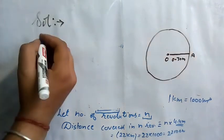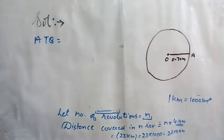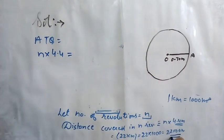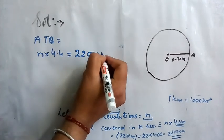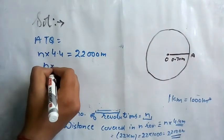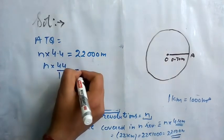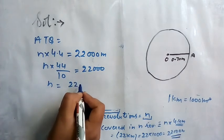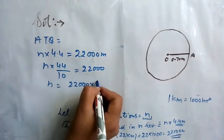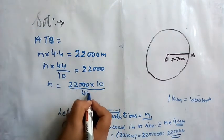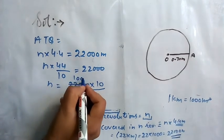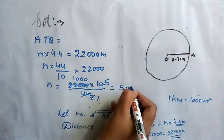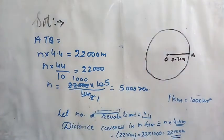According to the question, n × 4.4 = 22,000 meters. To find n, first remove the decimal: 4.4 becomes 44/10. Taking 44/10 to the right-hand side, 10 goes to multiply and 44 goes to divide. So n = 22,000 × 10 ÷ 44 = 5000 revolutions. This is the required answer.